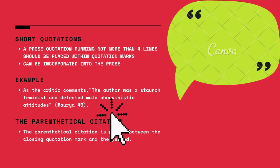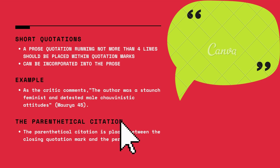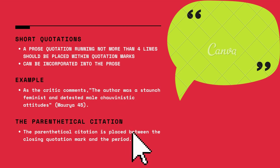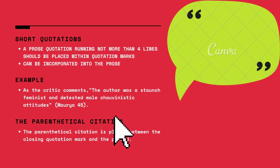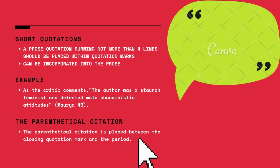What will you do for short quotations? A prose quotation that runs not more than four lines should be placed within quotation marks, and this can be very easily incorporated into the prose. For example, you ask the critic's comment, then come the quotation marks and the original text. The quotation ends, and now you bring in the parenthetical citation — author name, space, page number, close the parenthesis — and then comes the full sentence. The parenthetical citation is placed between the closing quotation mark and the sentence period.